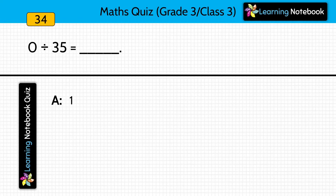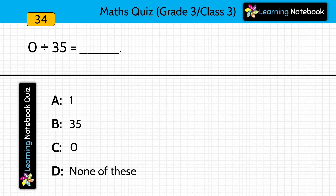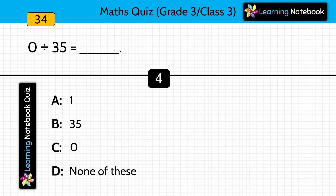0 divided by 35 equals to dash. Answer is 0.